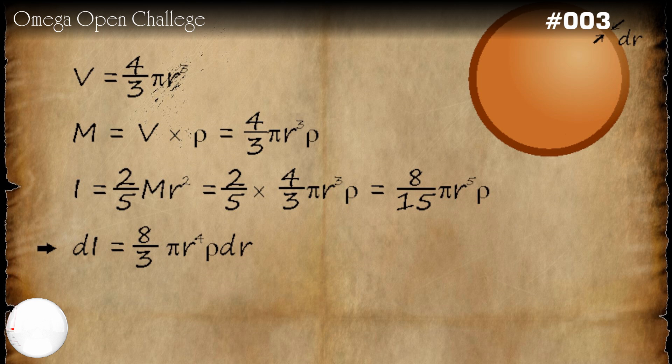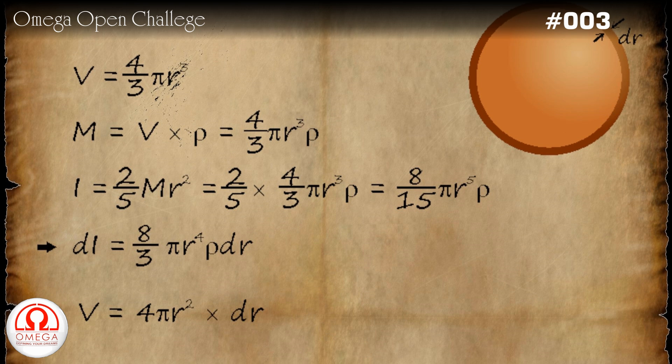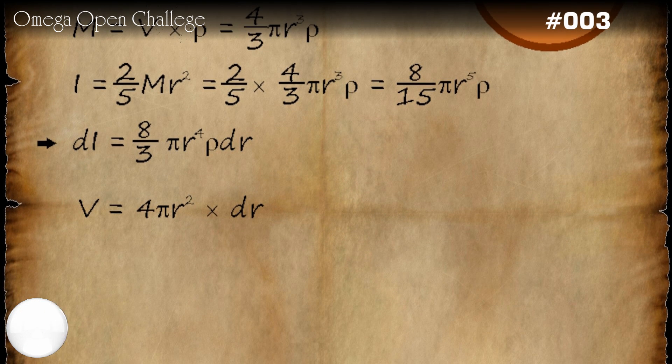Since dr is infinitesimally small, the volume of the shell is its surface area into thickness or 4 pi r square into dr. Mass of the shell is given by volume into density or 4 pi r square into rho dr.